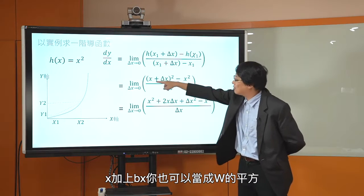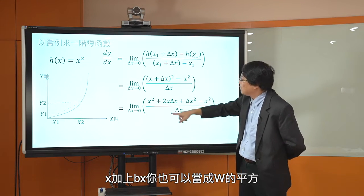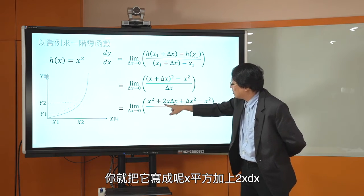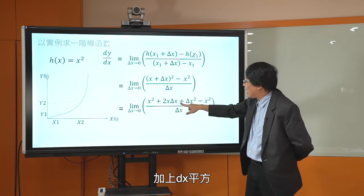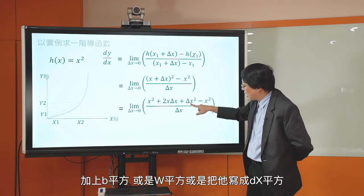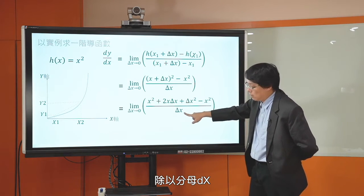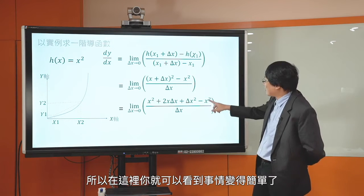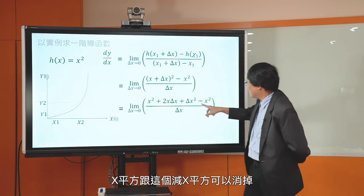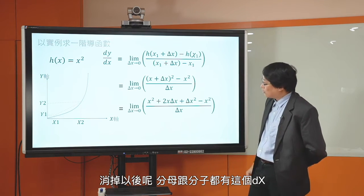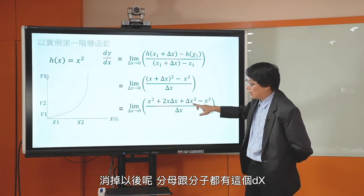X加DX的平方，用A加B的平方等于A平方加2AB加B平方的公式，就写成X平方加2X·DX加DX平方，然后减掉X平方，除以分母DX。X平方跟减X平方消掉，分子分母都有DX，把DX消掉，就得到2X加DX除以1，也就是2X加DX。